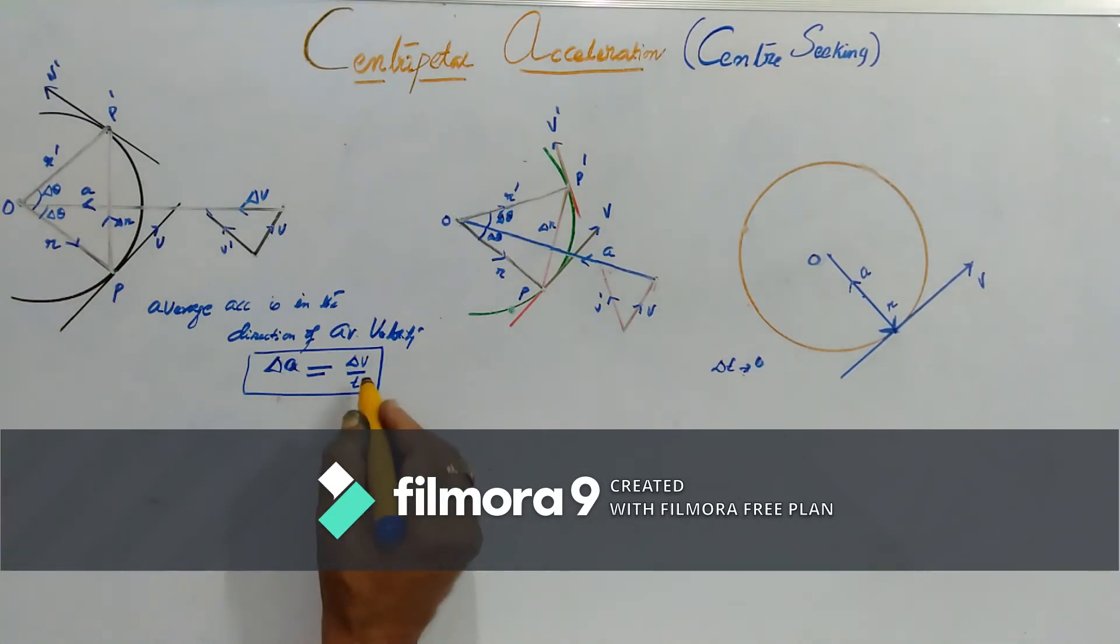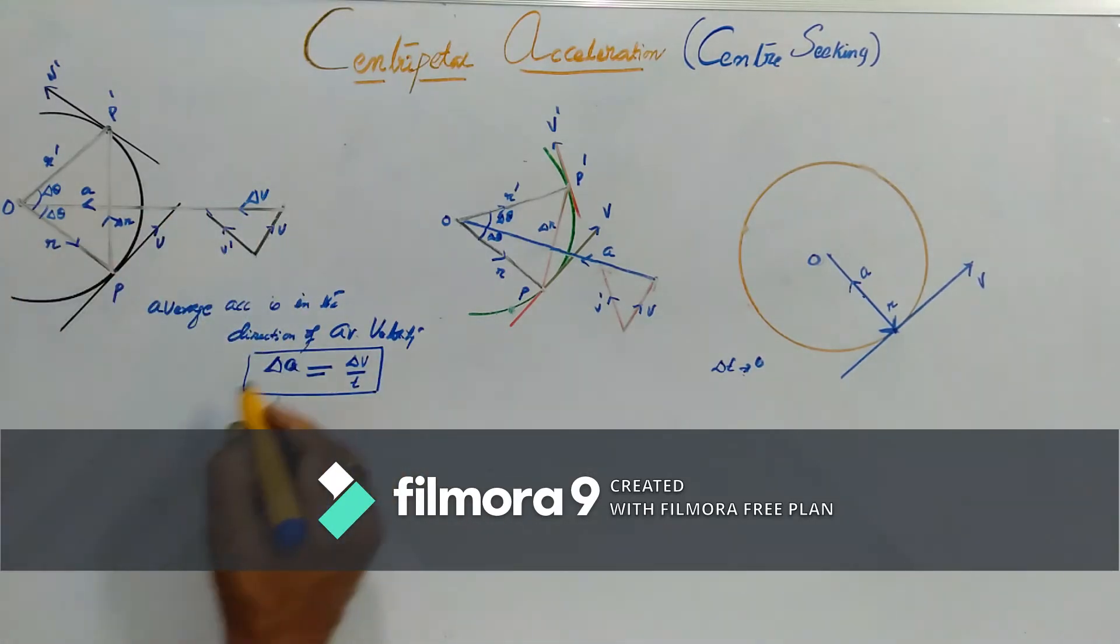Now, when delta V is passing through the center, delta A must also be passing through the center. That's why it is called centripetal or center seeking acceleration.